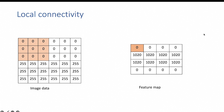Hello everyone. In this session we are briefly going to discuss the concepts of local connectivity and parameter sharing within convolutional neural networks. We have understood how the convolution operation is performed by making use of filters or kernels, and the result of this convolution operation will be the feature maps as you are observing on the right hand side within this slide.